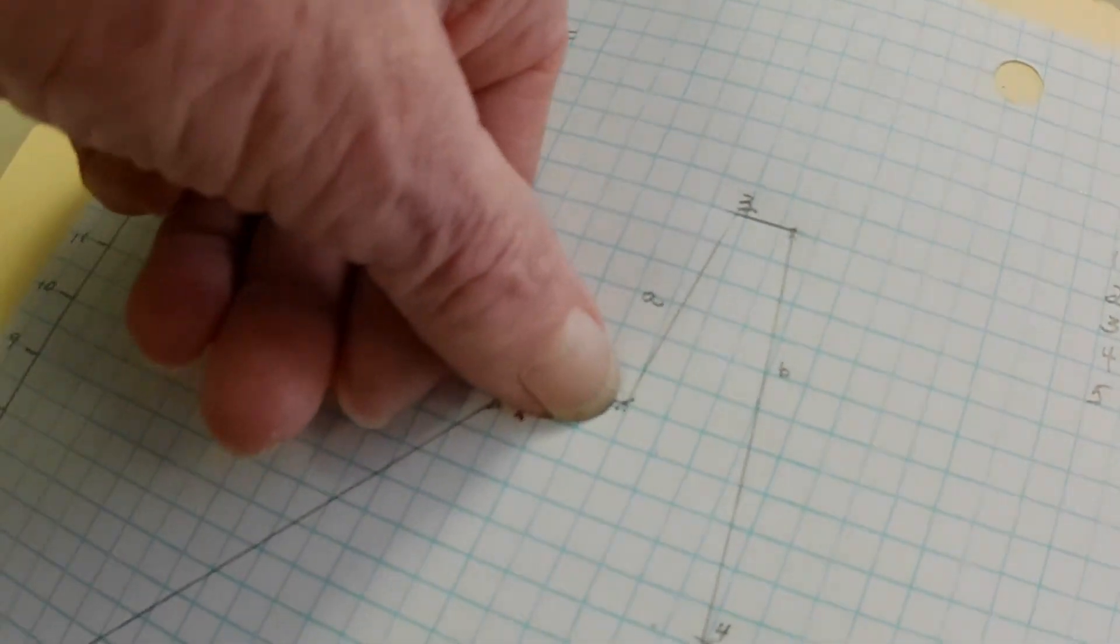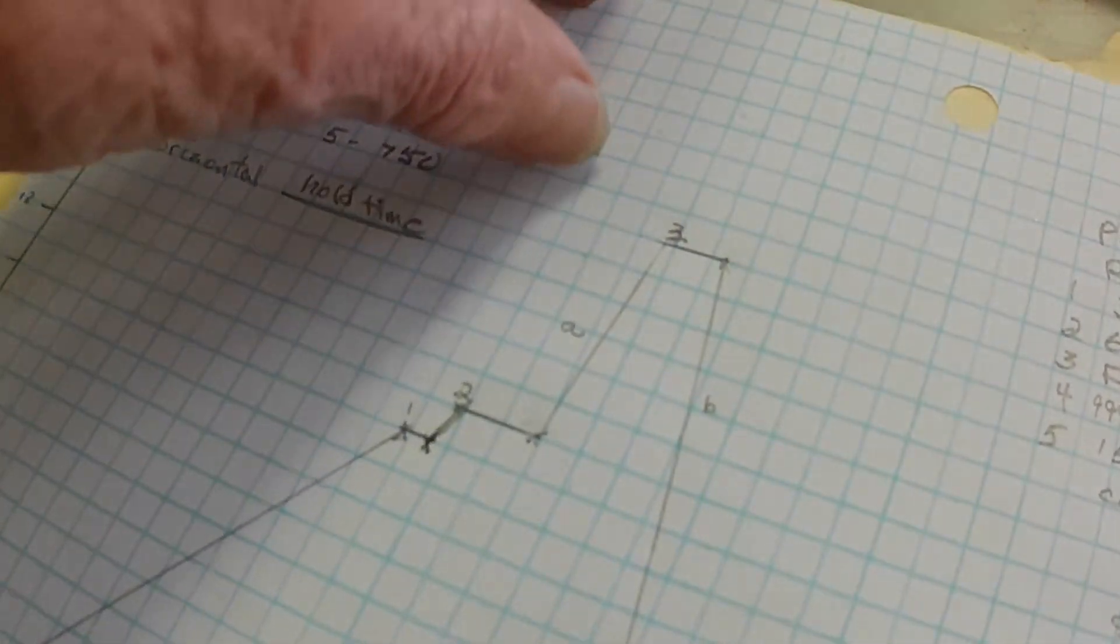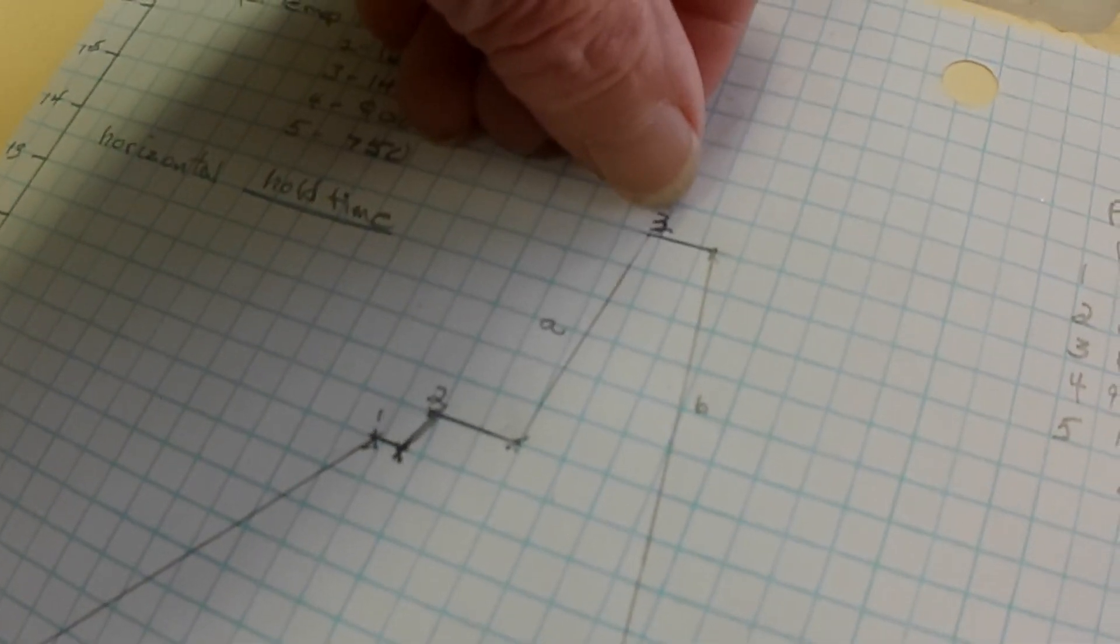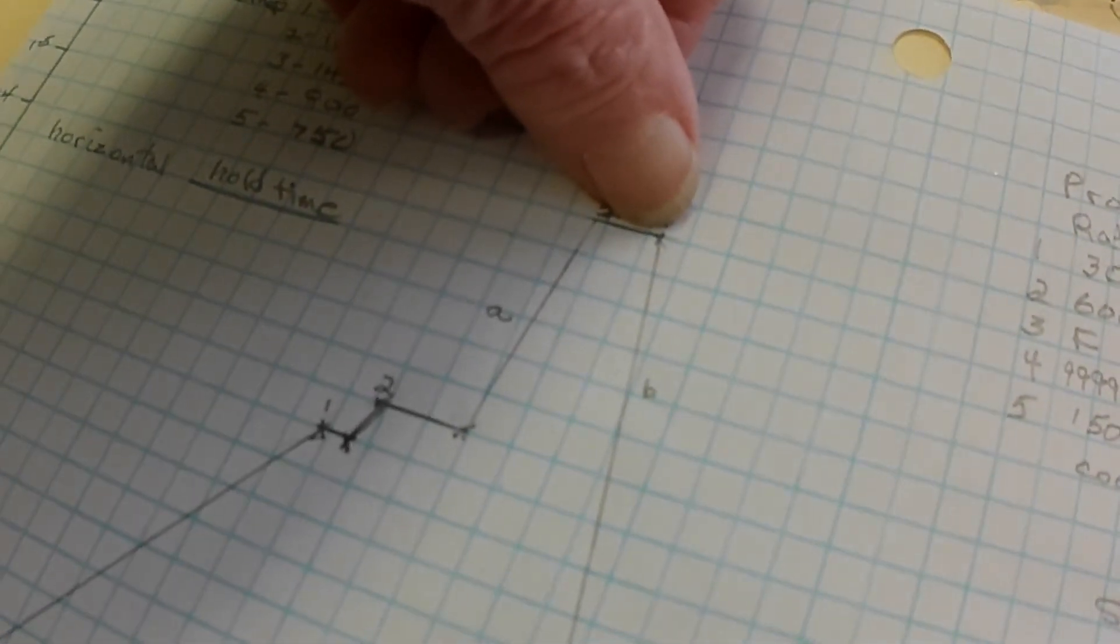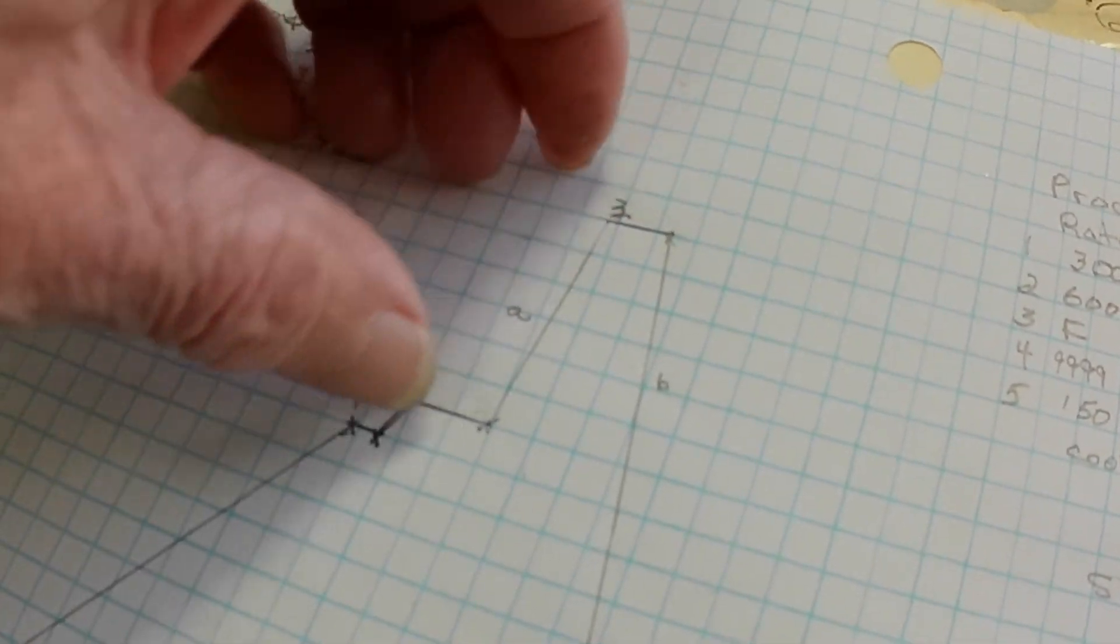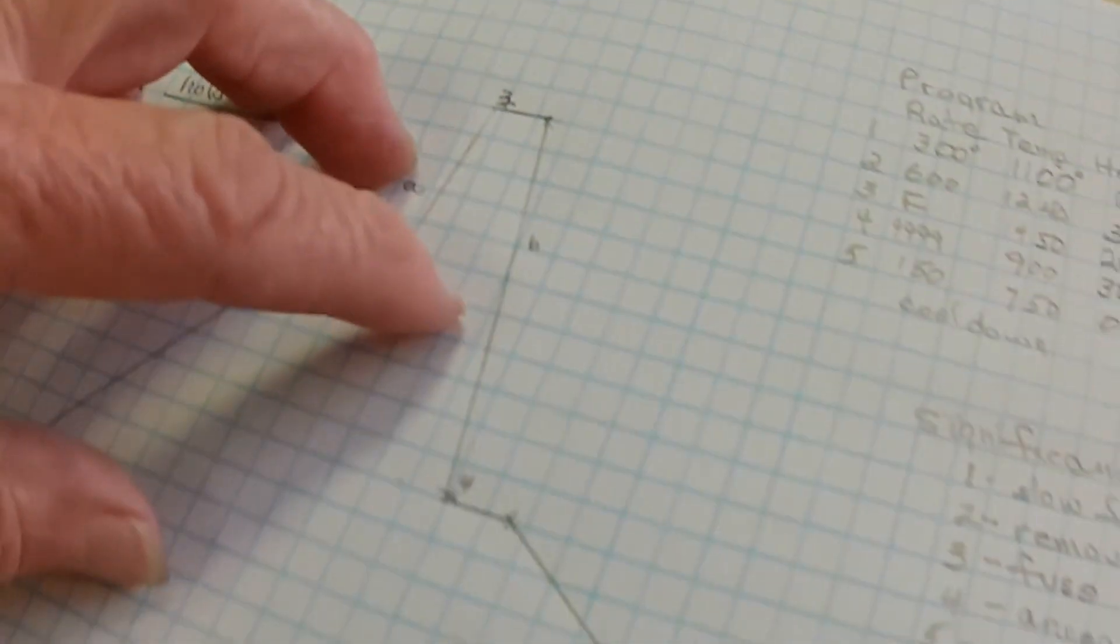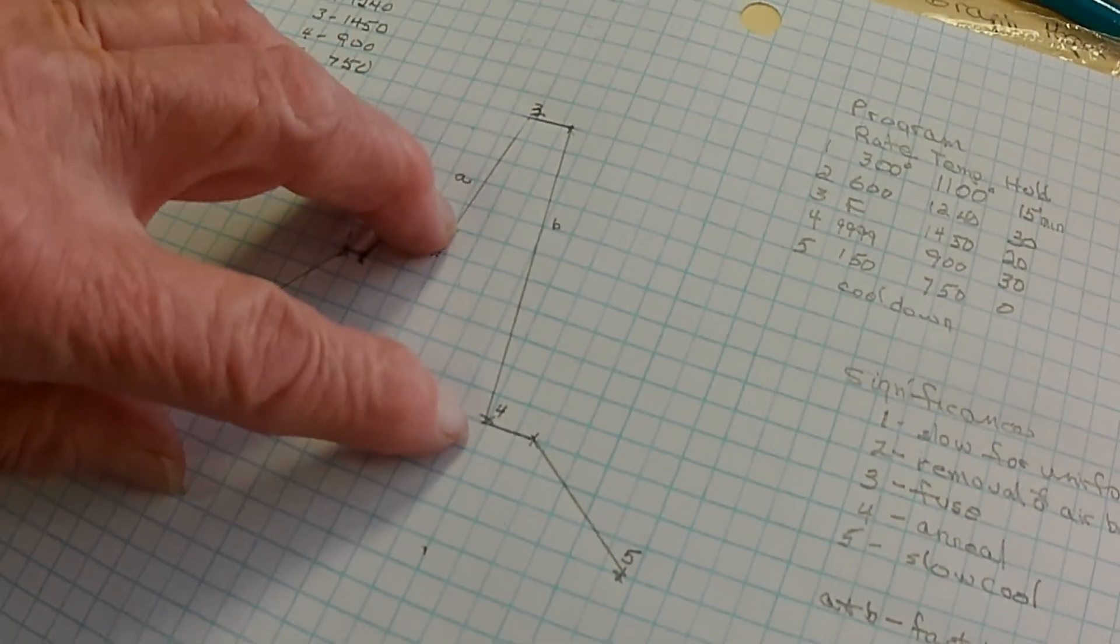We're going to heat it up as fast as we can to 1450. Then we're going to hold it until it smooths out, 20 minutes. Fourth step, we come down here to 900. This is the annealing point.